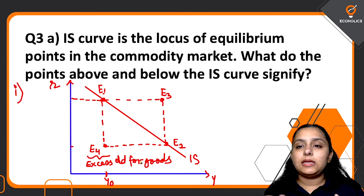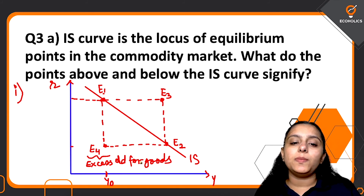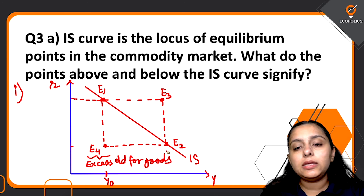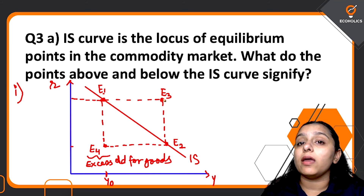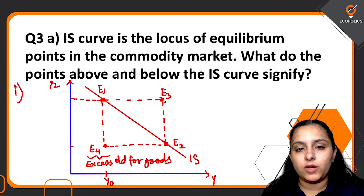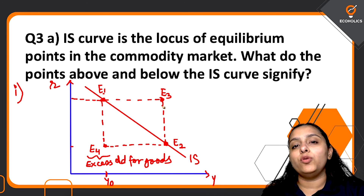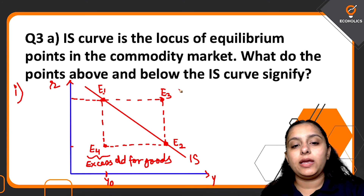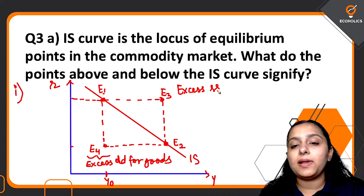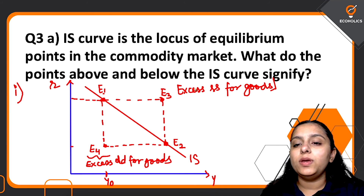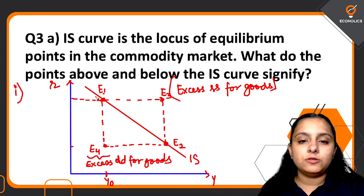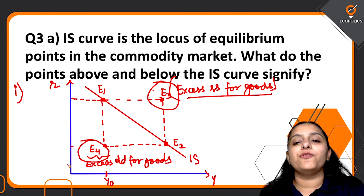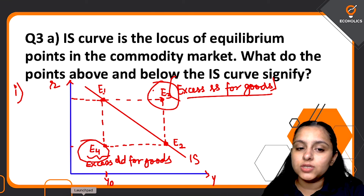Many students just directly write 'at E4 there is excess demand, at E3 there is excess supply' — but you have to compare and arrive at it properly. Comparing E3 and E2: income is the same at both, but rate of interest is higher at E3. Since the rate of interest is higher, investment is lower, so aggregate demand falls short of aggregate supply — there is excess supply at E3. So: points above the IS curve have excess supply for goods, and points below have excess demand for goods.